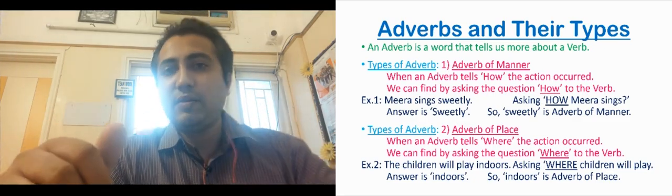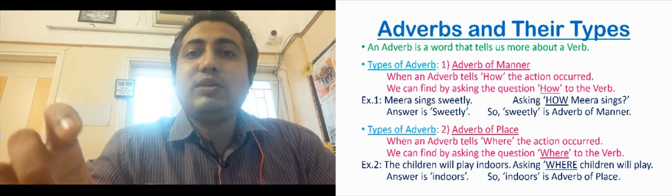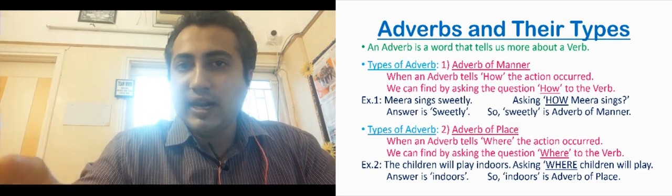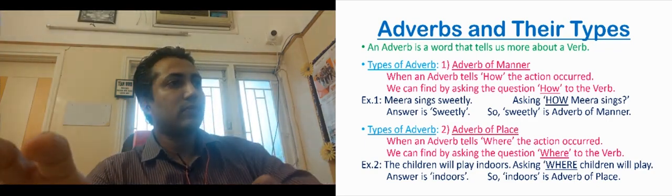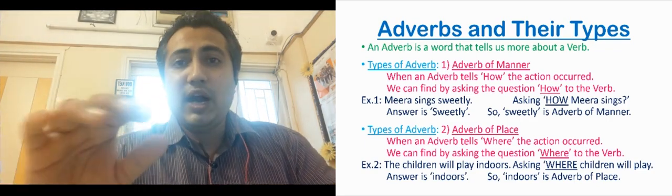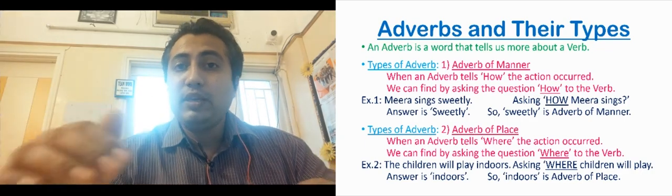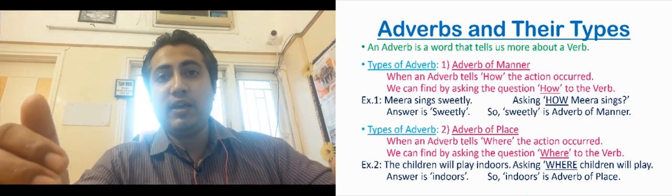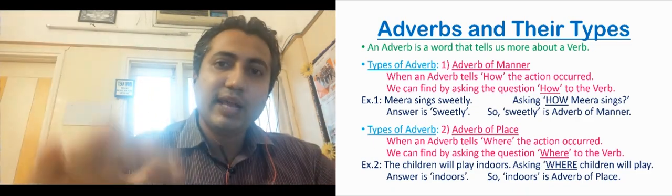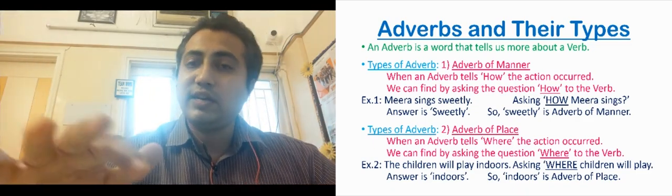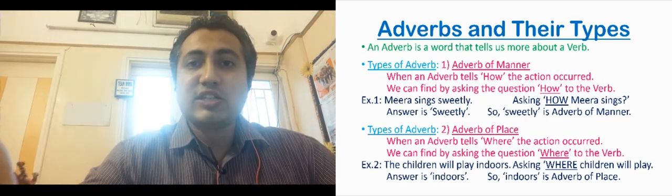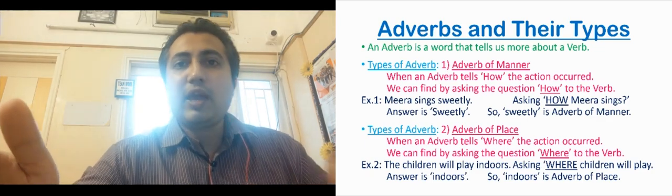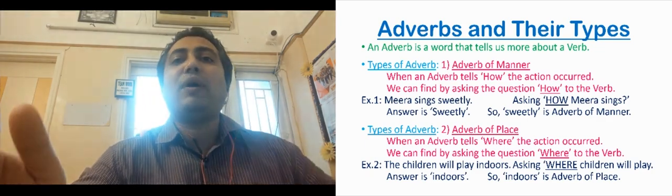Adverb is a word — once again I will repeat it — adverb is a word that tells us about an action or about the verb in the sentence. There are different types of adverbs. According to what information is given, that determines the type of adverb. If it tells how the action was done, that is a different type; where the action was done, that is a different type; when the action was done, that is yet another type.